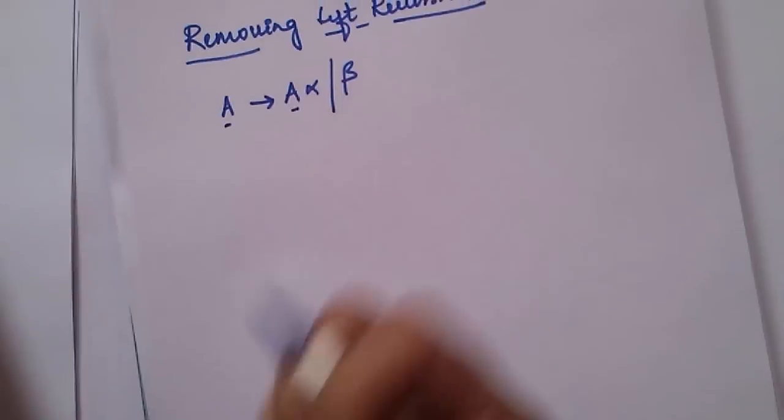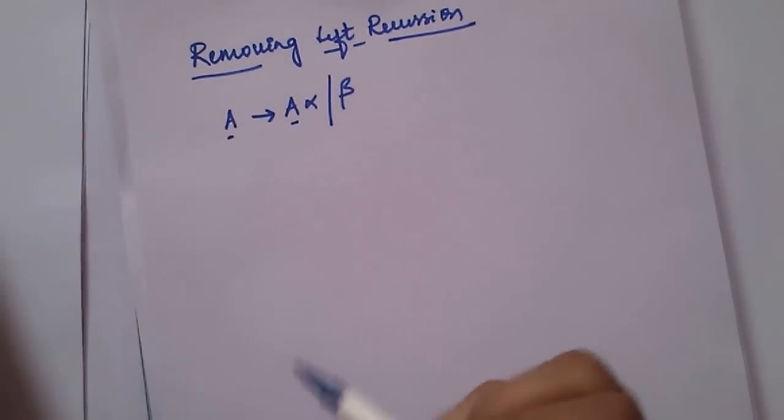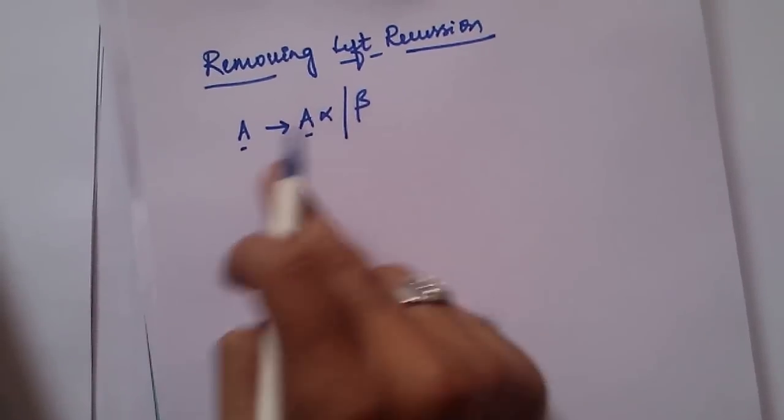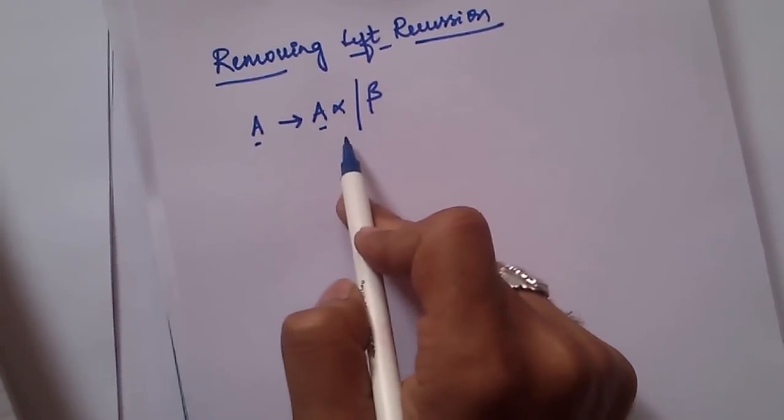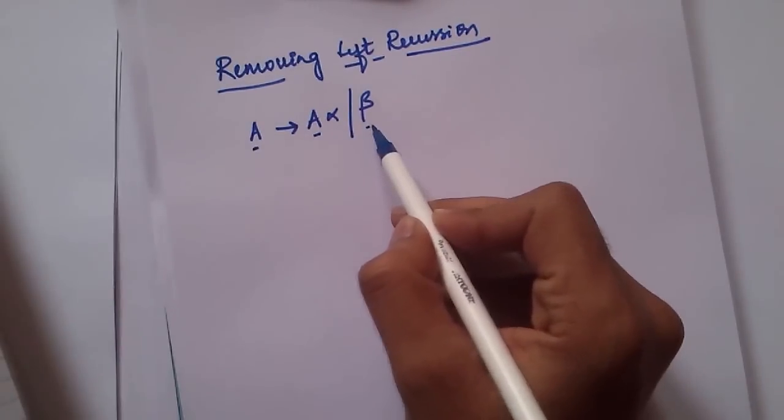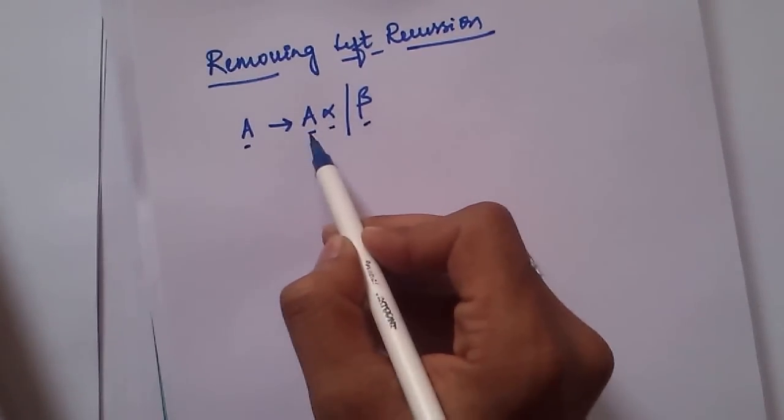So here, this is left recursion. If something appears in this format, this is left recursion. And this is a constant or terminal, this is a terminal, this is a non-terminal, and this is a non-terminal.